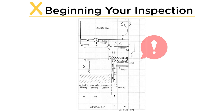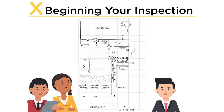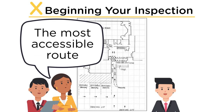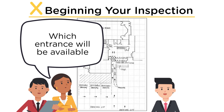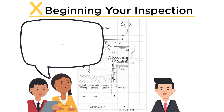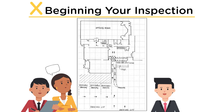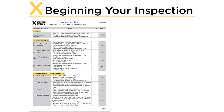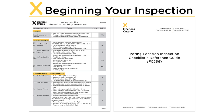Before assessing the voting location for accessibility, discuss and determine with the landlord the most accessible route from the parking lot to the voting room, or for internal inspections, from the elevator to the voting room. Also determine which entrance will be available on polling day and/or advance poll days, and any impact to students if the location is in a school. The route you follow during the accessibility assessment is the route electors will follow, and should be agreed upon by the inspecting pairs and the landlord. Complete each section of the voting location inspection checklist F-0255 using the following guidelines, and refer to the reference guide F-0256 for detailed instructions.